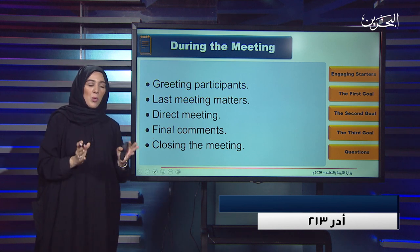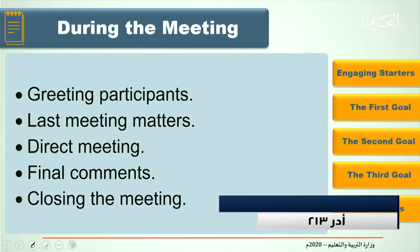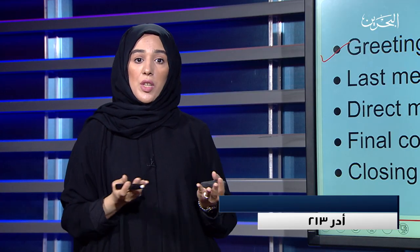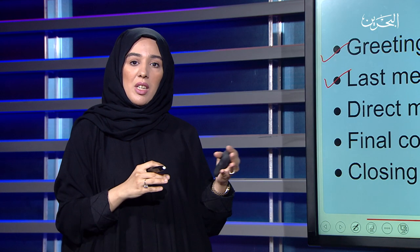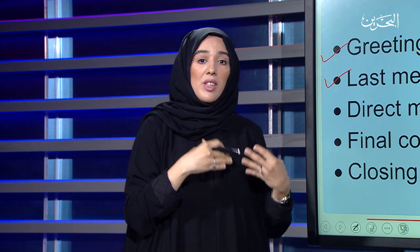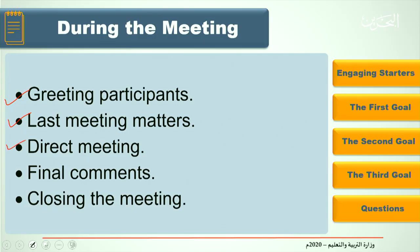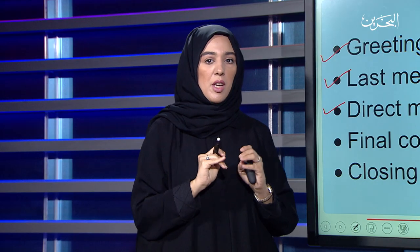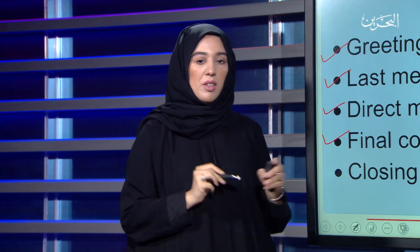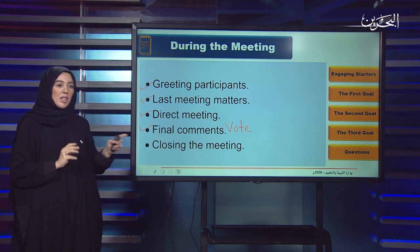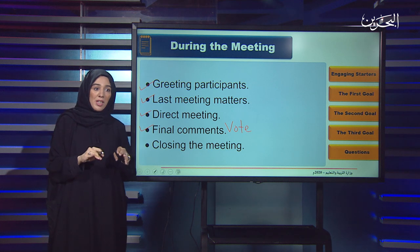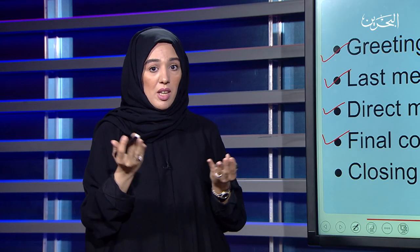During the meeting: first, greeting participants — the chairman will welcome them; second, last meeting matters — they discuss what was covered in the previous meeting and what actions have been taken; third, direct the meeting — they start discussing today's points; fourth, final comments — if any points need voting, the chairman will announce a vote; fifth, closing the meeting — the chairman thanks everyone and announces the time, place, and secretary of the next meeting.